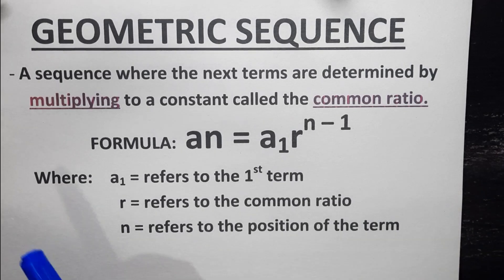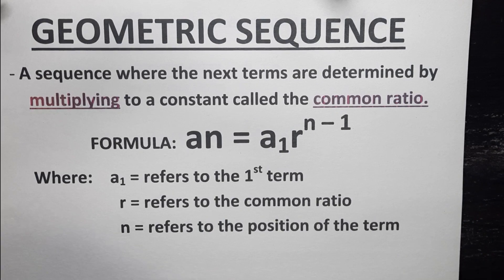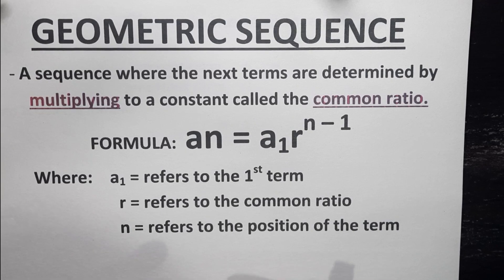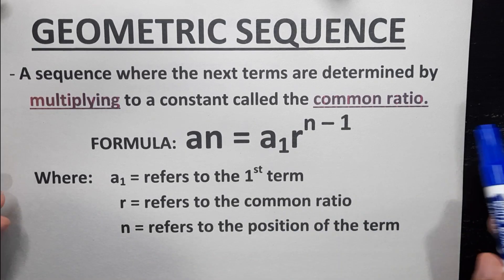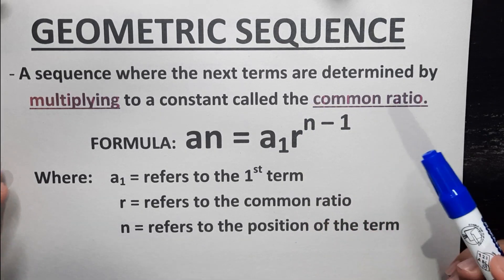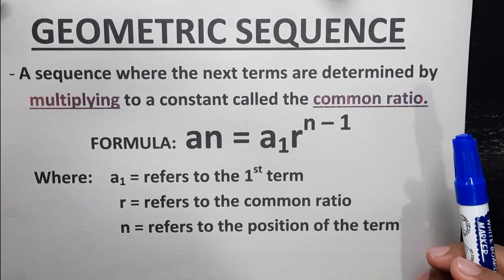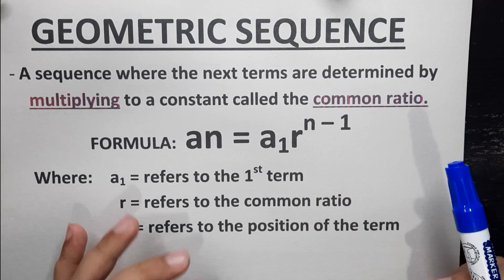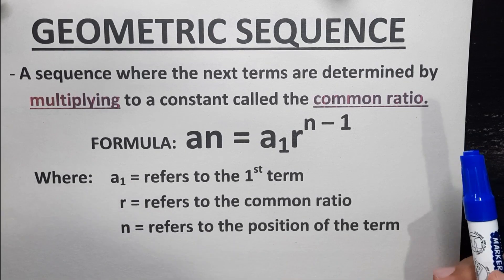A geometric sequence is a sequence where the next terms are determined by multiplying a constant called the common ratio. In arithmetic sequence, we have the common difference. In geometric sequence, we have the common ratio.